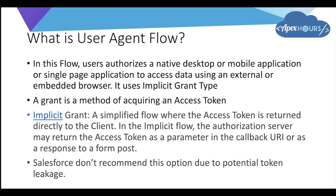Implicit grant is a simplified flow where the access token is returned directly to the client. The authorization server may return the access token as a parameter in the callback URL or as a response to a form post. So when you make a request to Salesforce's authorization endpoint, you get back a URL where the access token is encoded — that is implicit grant.